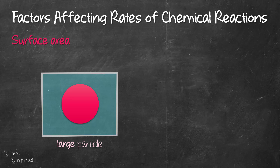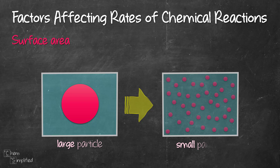So now, let's say we were to crush this large particle into small bits — like a powdered form. That means we now have more surface of the solid particle in contact with our blue particles. More contact area means larger surface area.